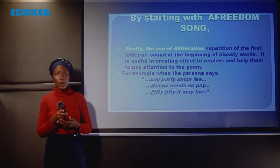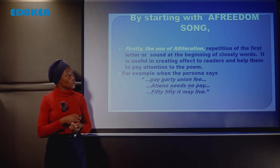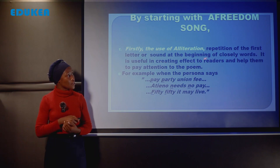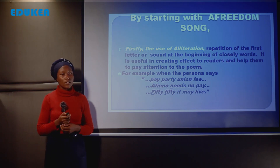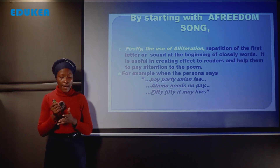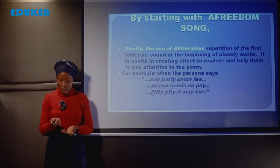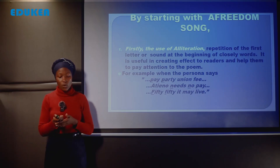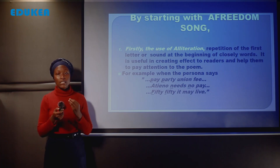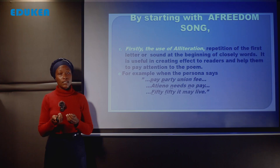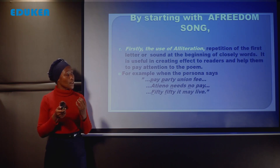The first poetic device used in Freedom Song is alliteration. Alliteration is the repetition of the first letter or sound at the beginning of closely placed words. It is useful in creating an effect for readers and helping them pay attention to the poet. In Freedom Song, the poet has used alliteration — the repetition of the same letter or sound at the beginning of closely placed words.